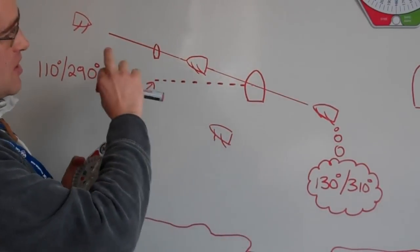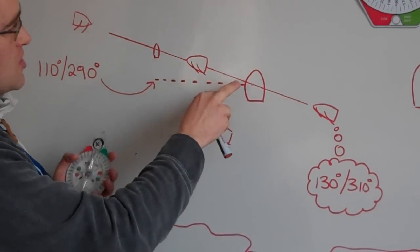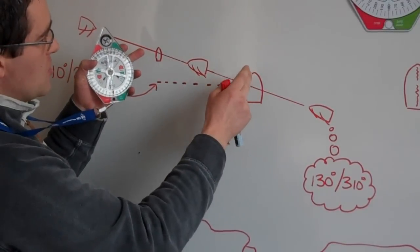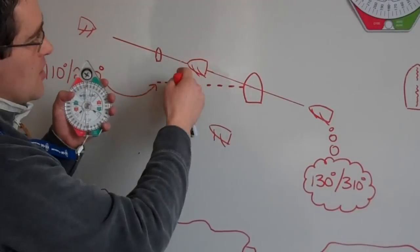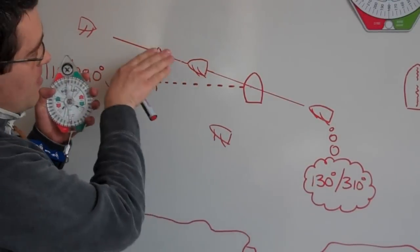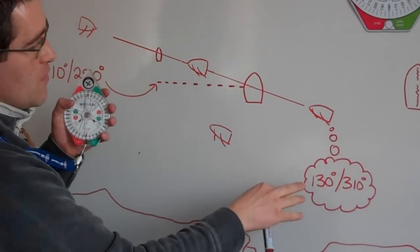The other way you can establish the bearing of the start line is just to sail between the two points of the committee boat and the pin end. And when you're comfortable and you're sailing dead along the line you can then read off your compass again. Depending on which way you're sailing it will read these two figures.